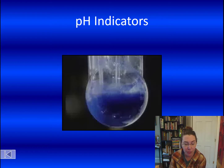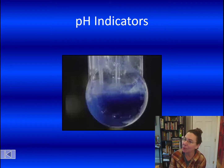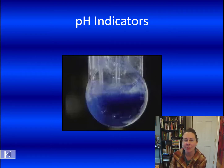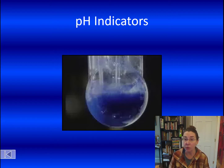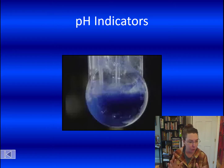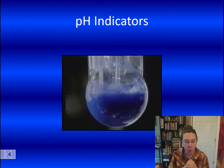We're going to be using page 13 in that packet — it has a big Roman numeral 3 at the top and says 'Acid Base Indicators.' So what is an acid base indicator? It's something that can tell you the pH of a substance, either in a broad general way or in a very accurate and precise way, and there are different tools used at different times.